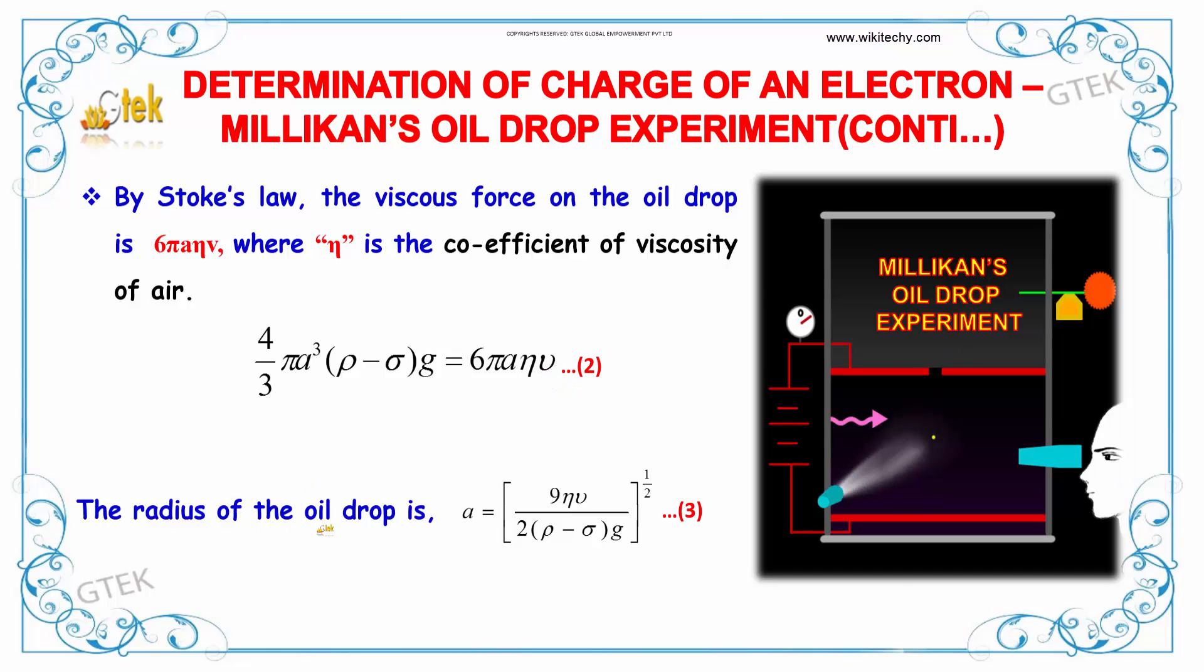The radius of the oil drop can be calculated as a equals 9 nu V by 2 into rho minus sigma into g, power 1 by 2.